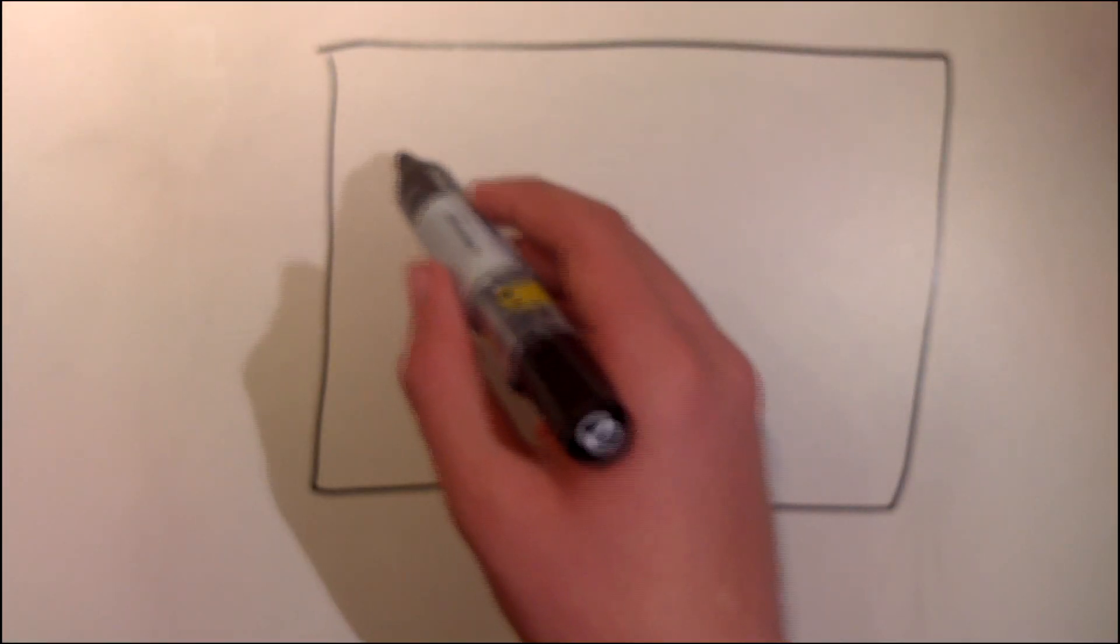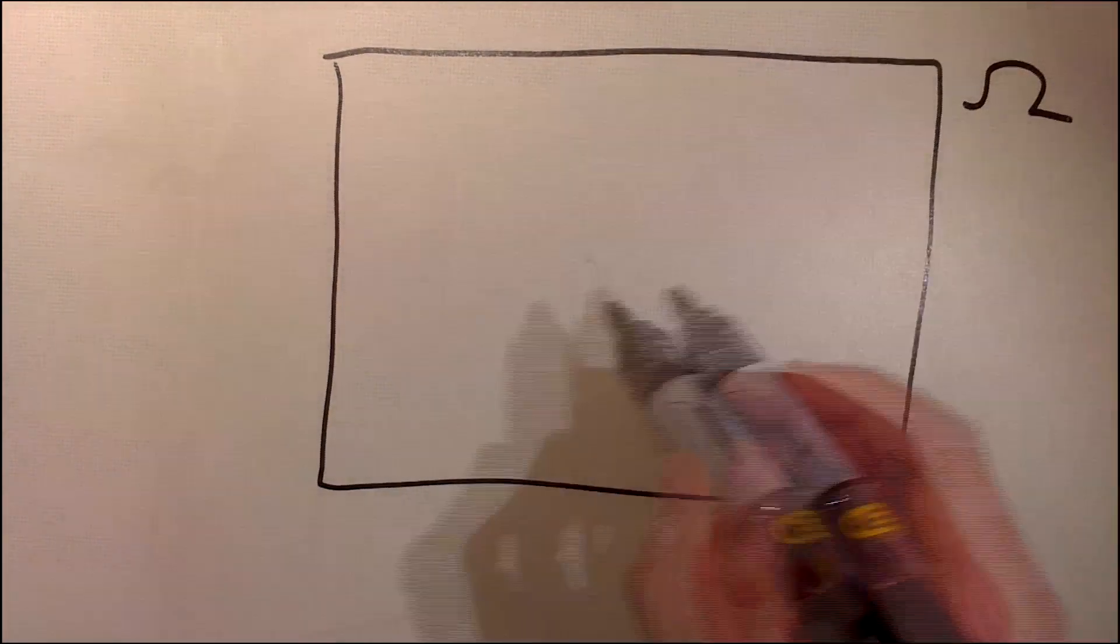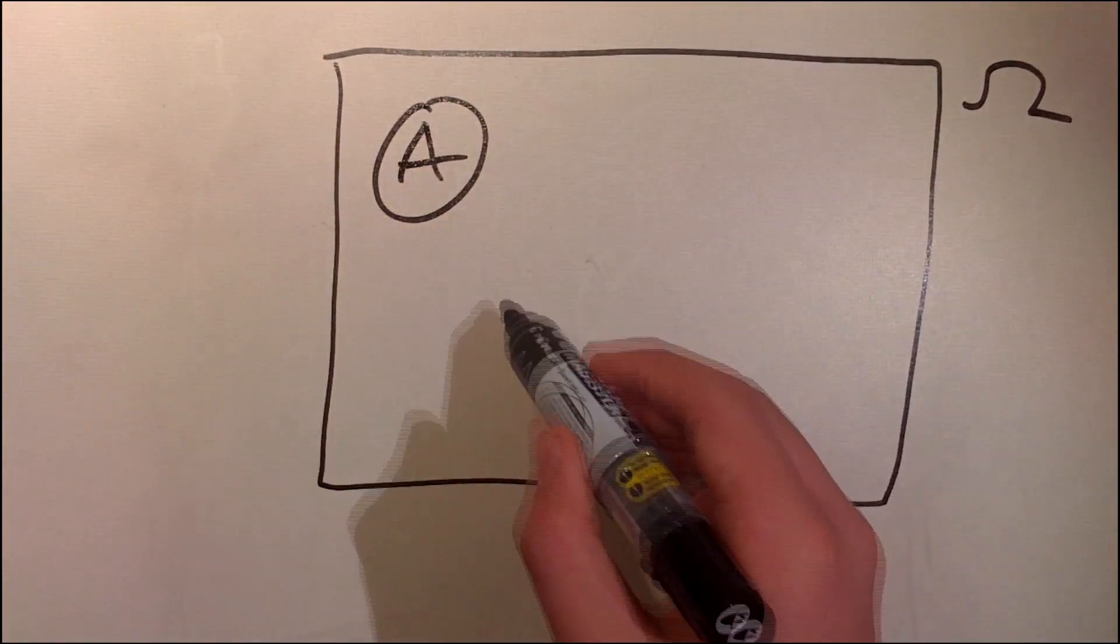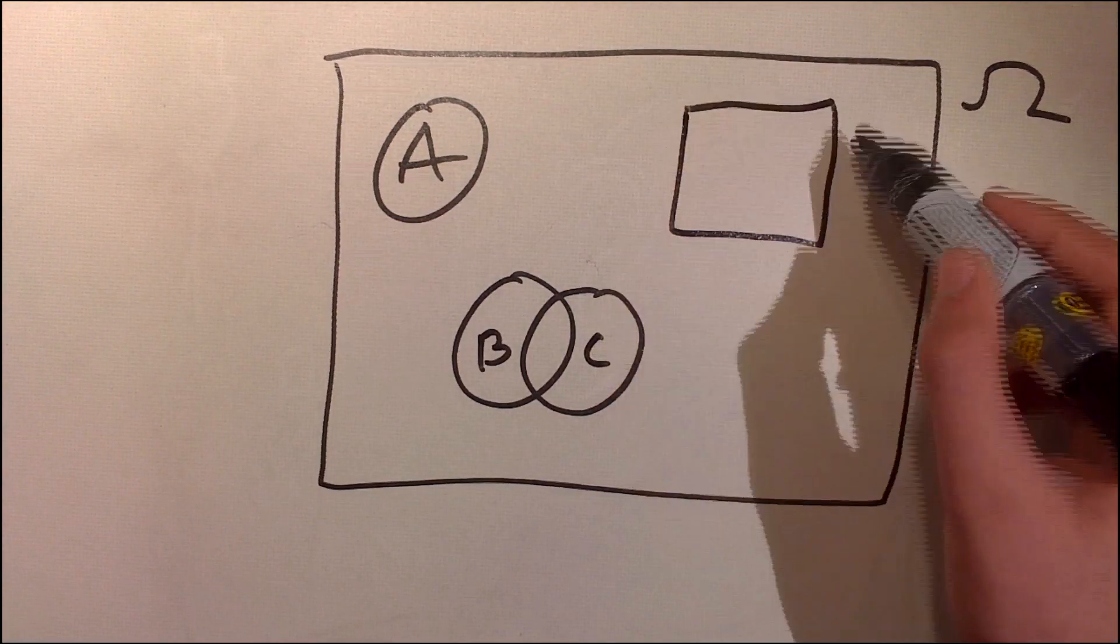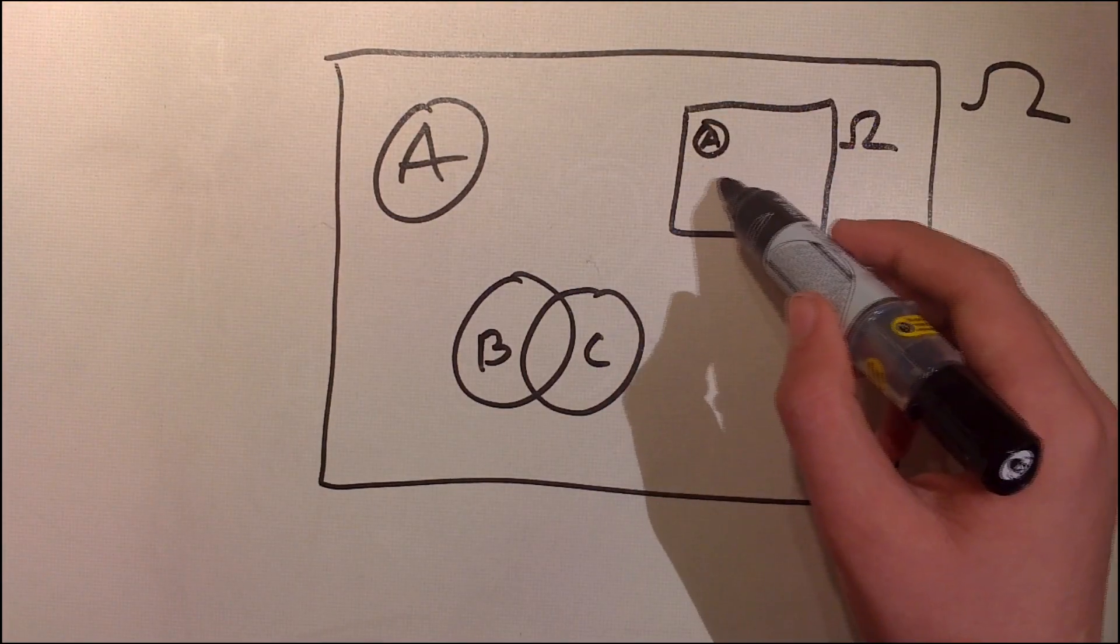But let's get a little bit deeper. What the paradox is saying is that there can be no set which contains all the sets there are. Because if there is such a set, it must contain itself.